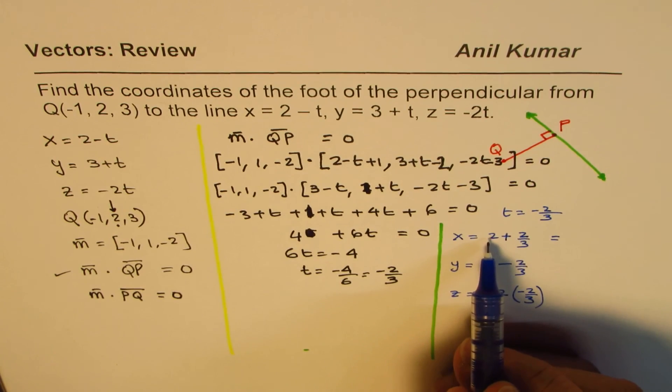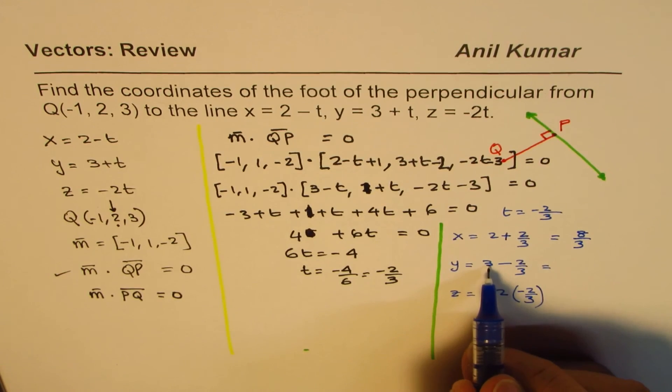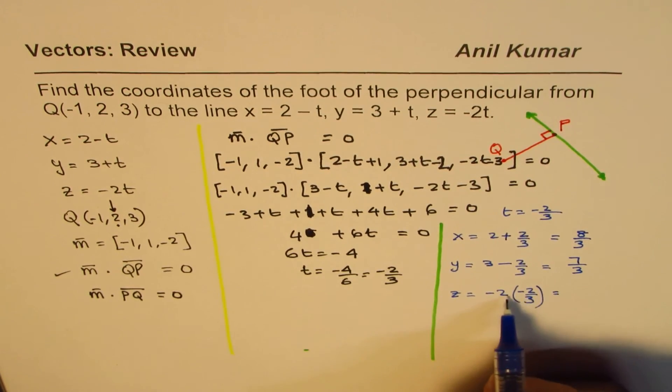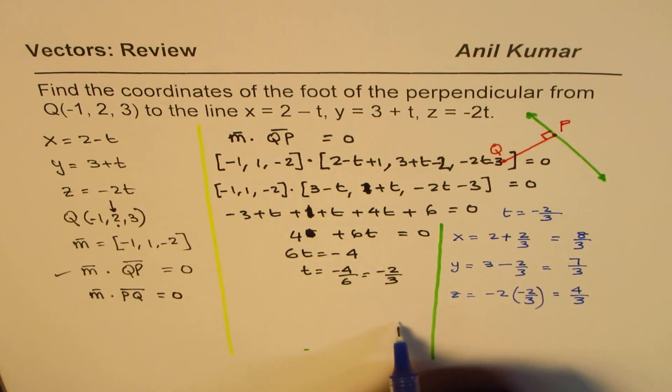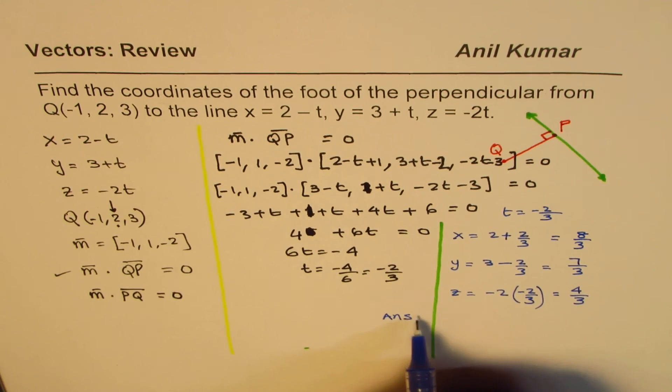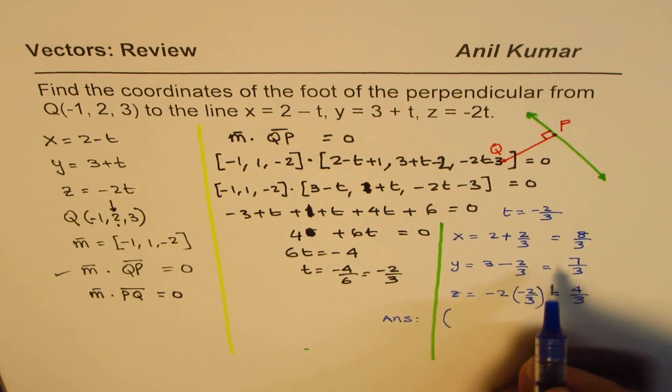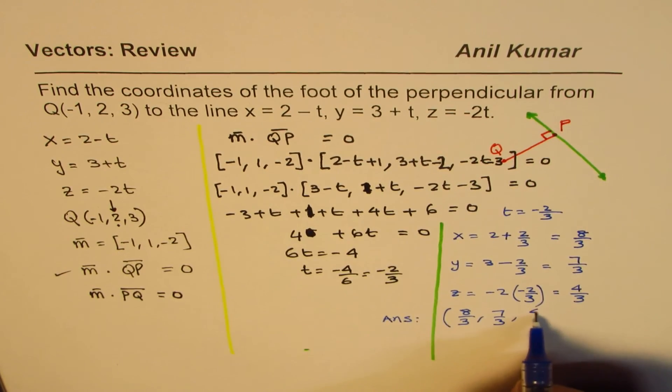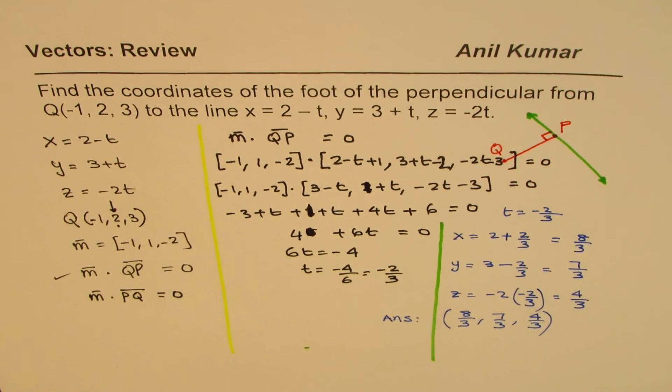So that gives us the answer. So 3 times 2 is 6, 6 + 2 is 8. We get 8/3 here. 3 times 3 is 9, 9 - 2 is 7. That becomes plus 2 times 2 is 4, 4/3. And so our answer is that the foot of the perpendicular is the coordinates of that point is (8/3, 7/3, 4/3). So that is how you can find the coordinates of the foot of the perpendicular.